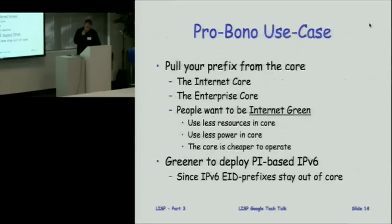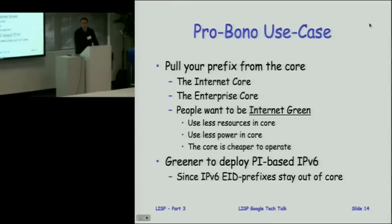That's the pro bono use case — we'd like people to pull their prefixes from the internet core or enterprise core. Less resources used in the core means a greener core: less memory, potentially cheaper devices, faster feature upgrades from vendors, and less power consumption. It will be greener to deploy PA-based IPv6 rather than PI. Most IPv6 prefix allocations are going to be PI — if we continue this we'll have flat routing in the core that won't scale. We can keep IPv6 EID prefixes out of the core using LISP.